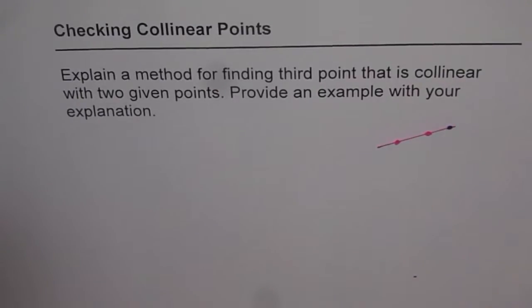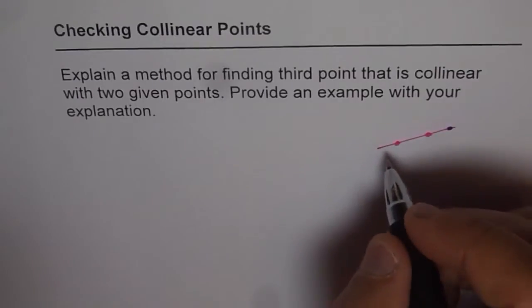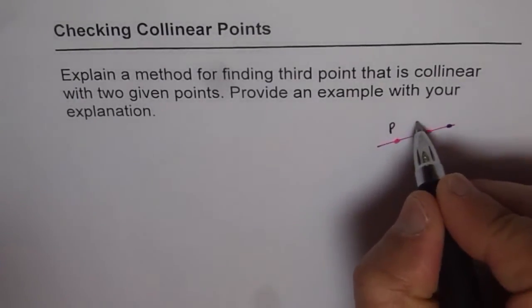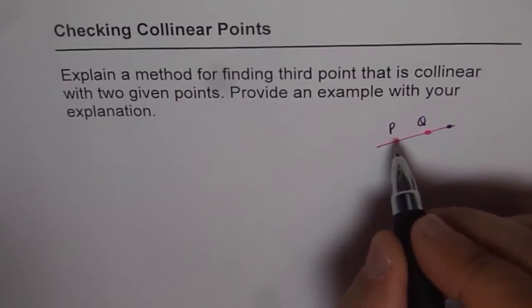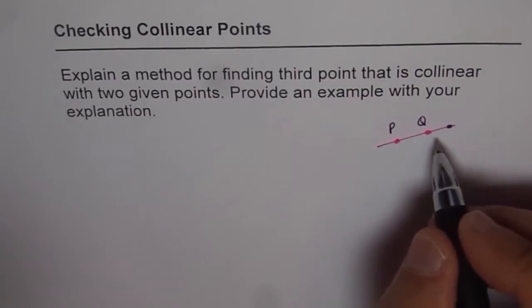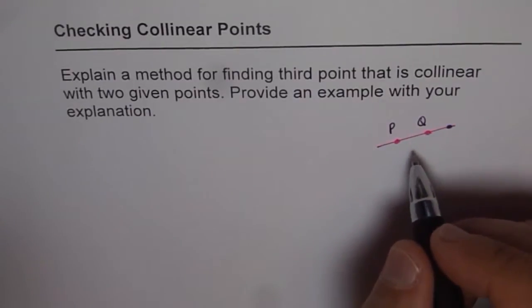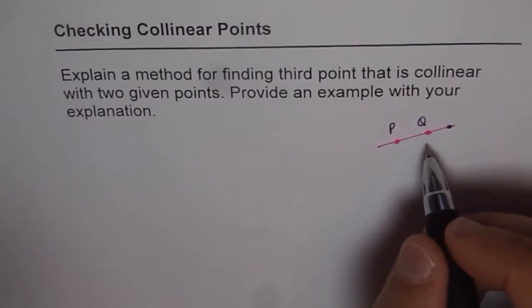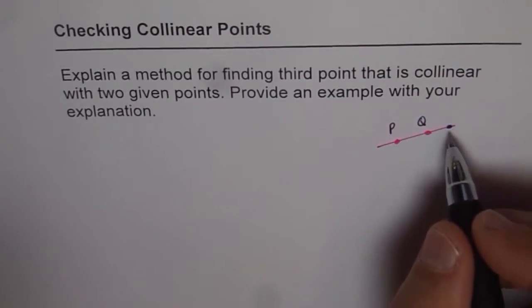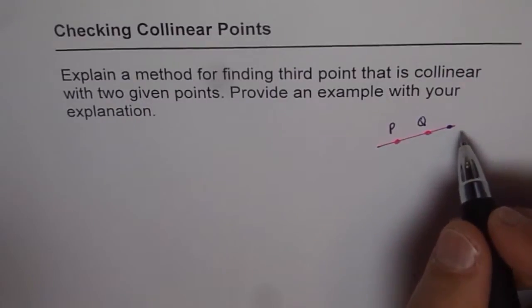So what we can do is once we have two points, we can find the equation of a line. Let's say this point is P and this point is Q. Using points P and Q, we can find the equation of a line, then substitute any value of X and find Y value to get the third point. Like that, we can get many other points on the line.